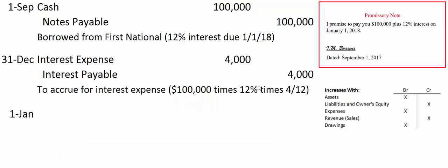When learning accounting we almost always have transactions at the beginning or end of the month, but in the real world we'd calculate interest to the very day. We debit interest expense because expenses are debits. Interest payable is a liability account — it increases with credits — so we credit interest payable for $4,000 and make a note to tell ourselves and the next person who looks at our books what we just did.